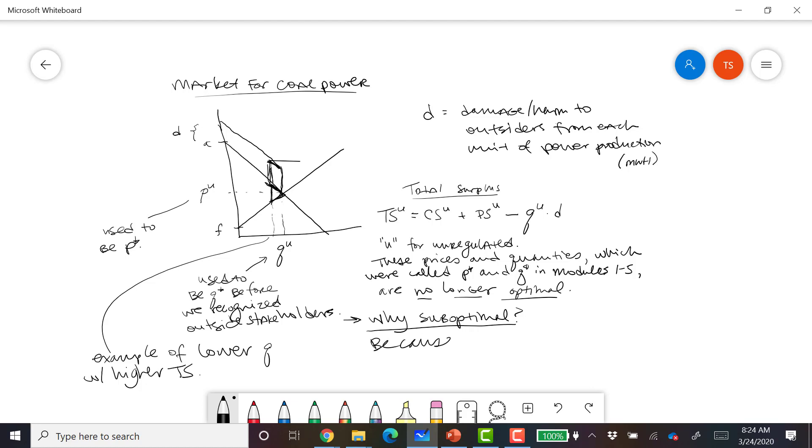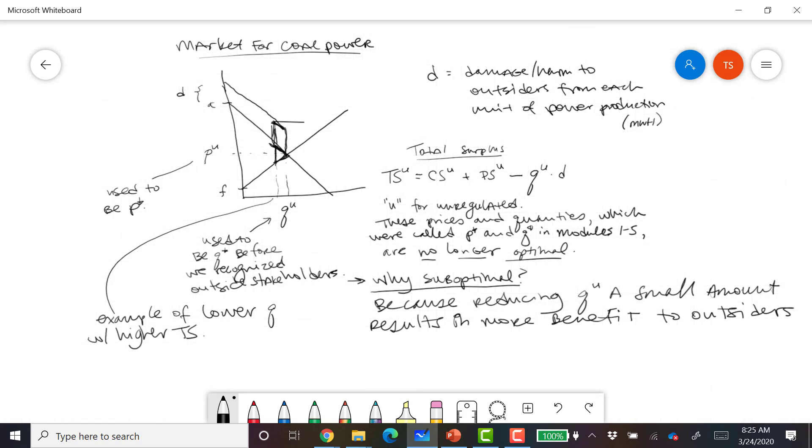Why is that the optimal? Because reducing Q^U a small amount results in more benefit to outside the market. If we lower the quantity, then the market participants will lose.